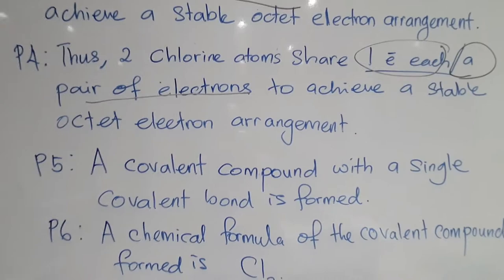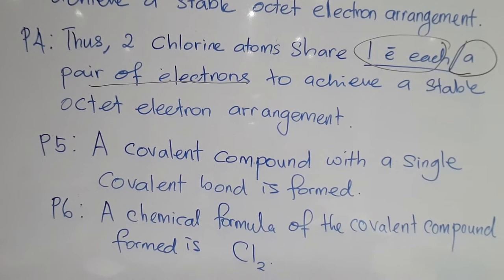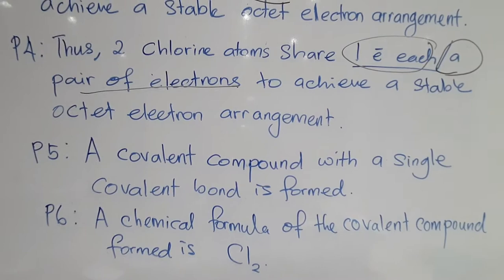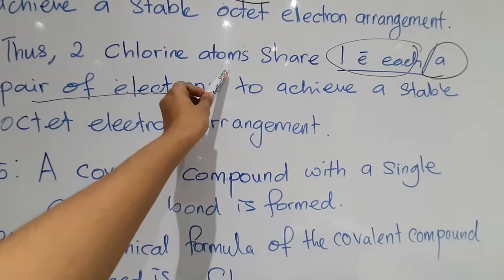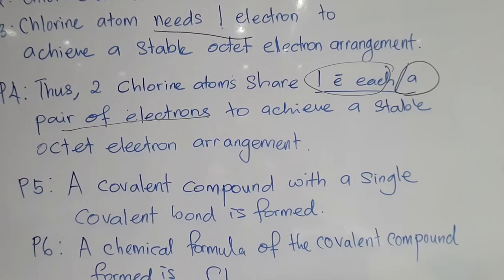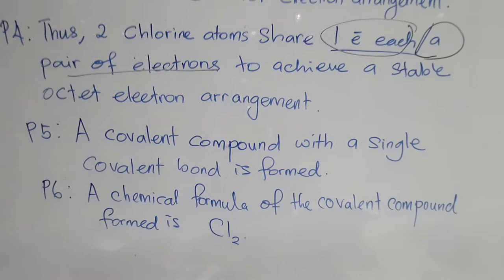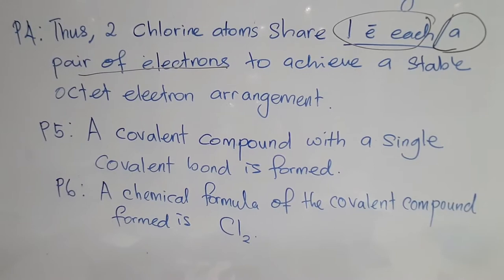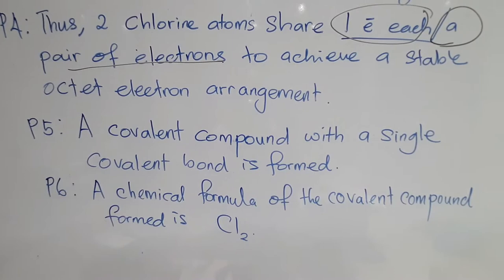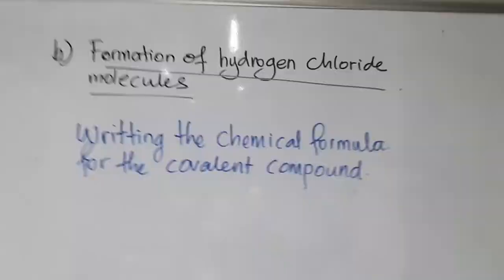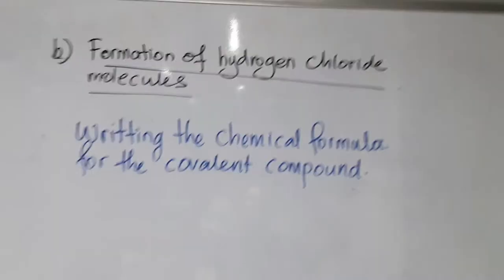Please focus on point four now. In the formation of chlorine molecules, the same elements are involved, so we can write it together. Two chlorine atoms share one electron each — or you can write it as a pair of electrons — to achieve a stable octet electron arrangement. Point five: a covalent compound with a single covalent bond is formed, because they share a pair. Point six: the chemical formula of the covalent compound formed is Cl₂.